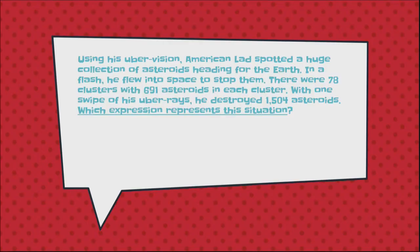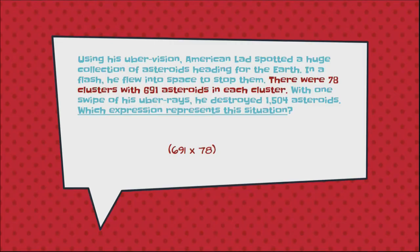I'm going to start with the first thing they talked about — the number of clusters and the number of asteroids in each one. To figure out how many asteroids were headed for Earth in total, that's clearly a multiplication problem: there are 78 clusters and each one has 691 asteroids. With one swipe of his Uber Rays, he destroyed 1,504 asteroids.